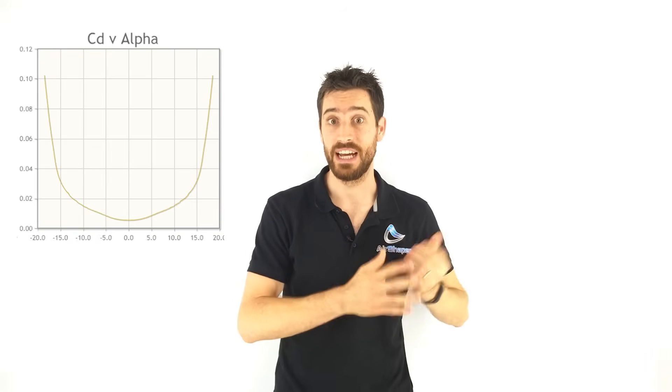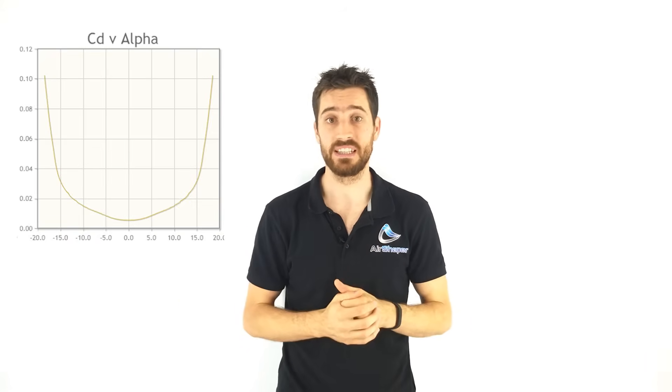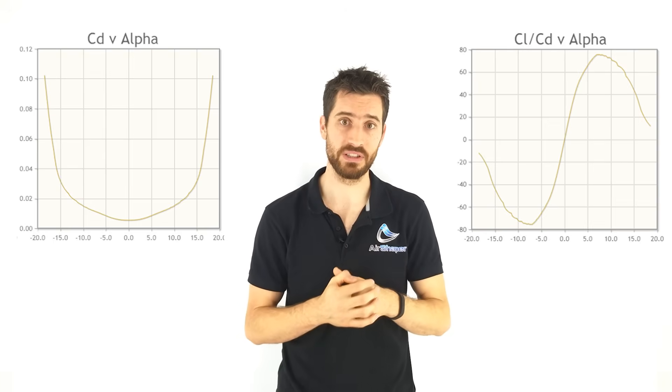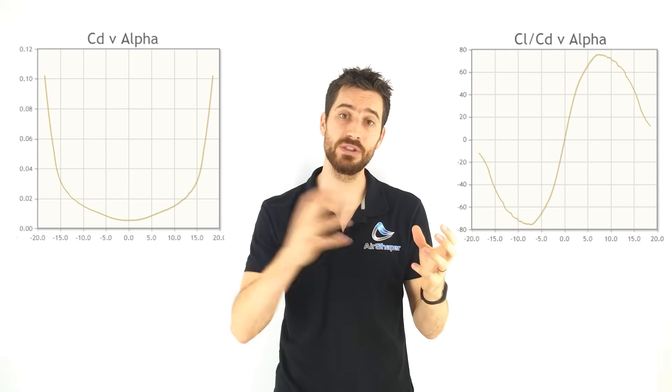Another effect of increasing the angle of attack is the increase in aerodynamic drag, which could offset the positive effect of the lift. To find the sweet spot, we can have a look at the curve of the lift over drag, which plots the lift over drag ratio in function of the angle of attack.